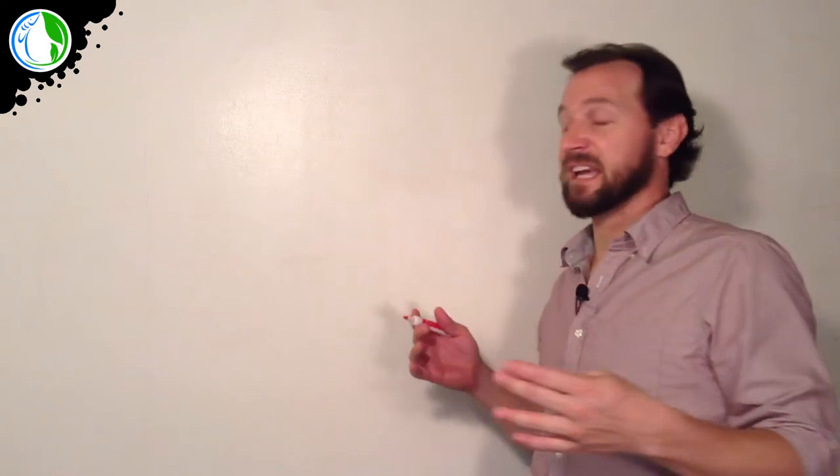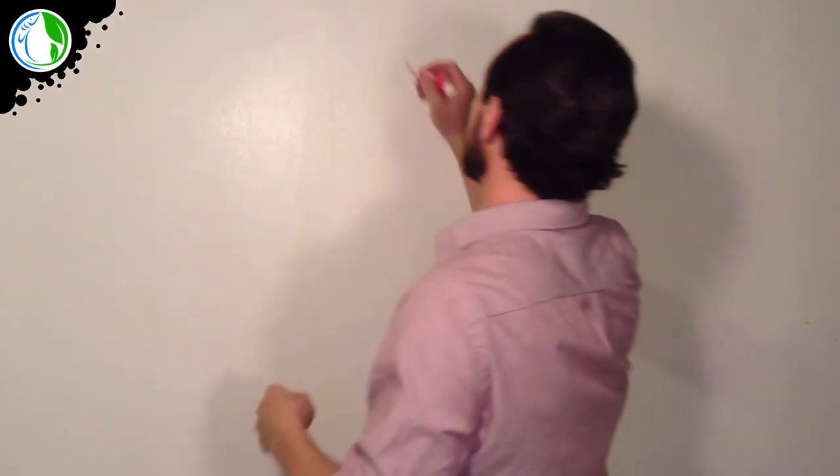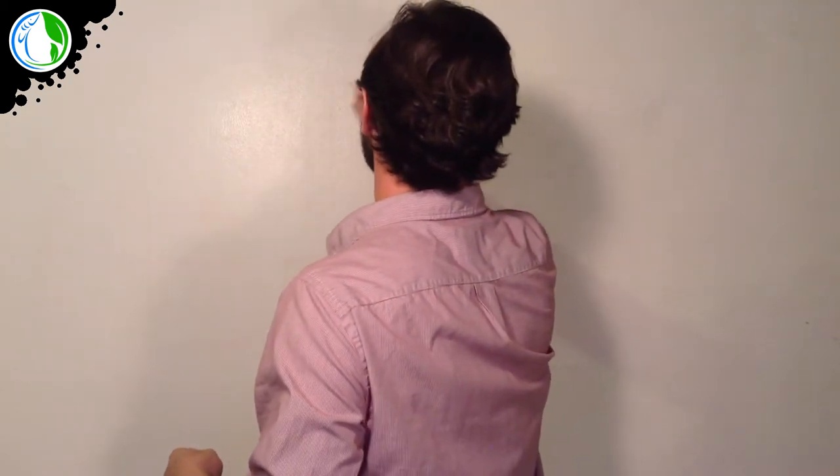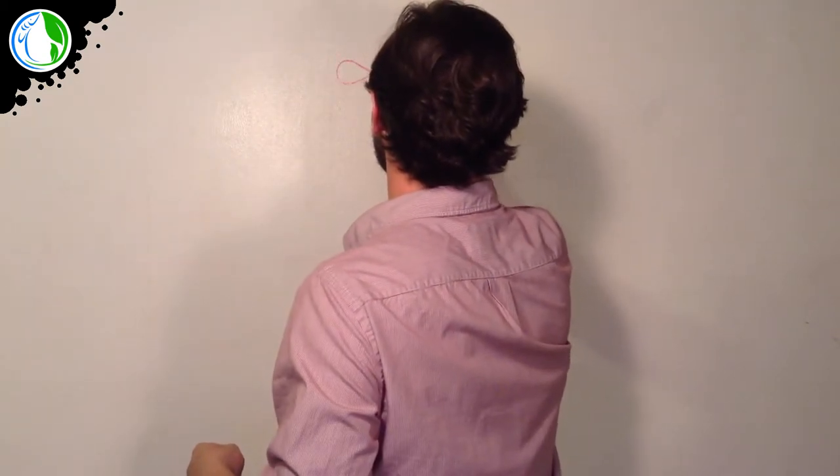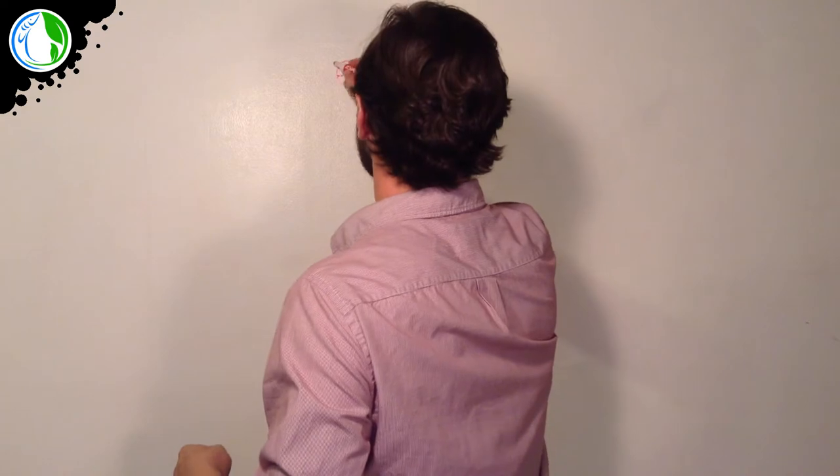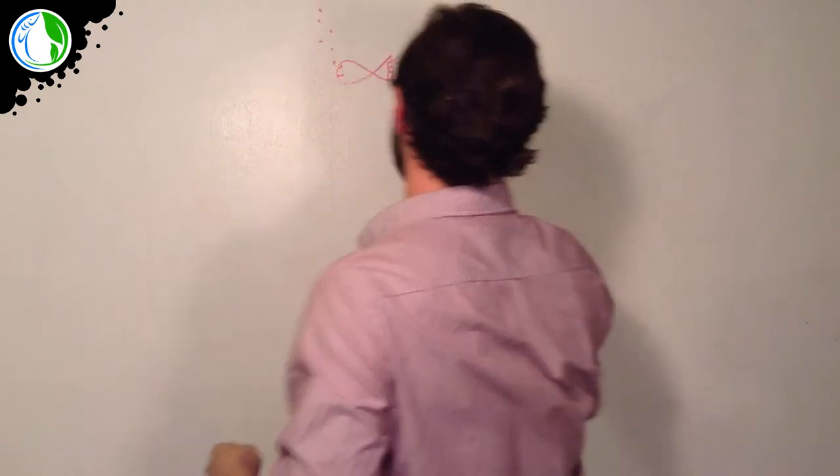Now the nitrogen cycle really isn't going to start until there's fish or some kind of animal biology in the tank to start creating some waste. So we're going to start out with a fish here. Cute little fish, little eyes, smiley face, little bubbles going up.